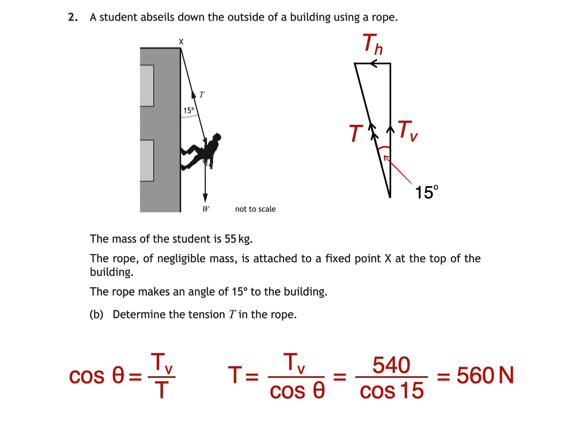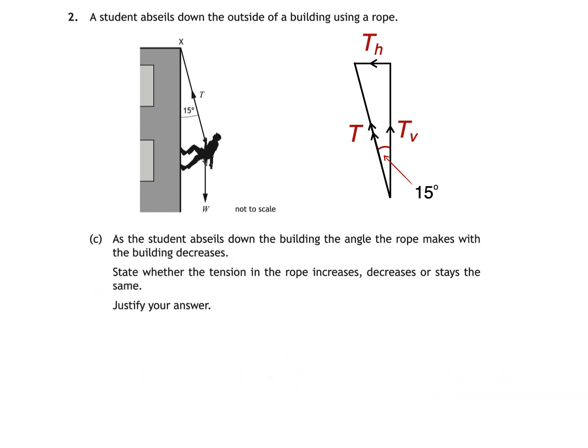Let's take a look at part C of the question. As the student abseils down the building, the angle the rope makes with the building decreases. State whether the tension in the rope increases, decreases or stays the same. Justify your answer. Let's go.